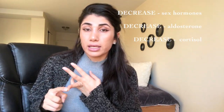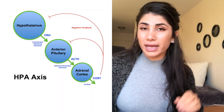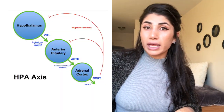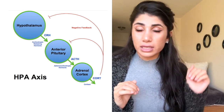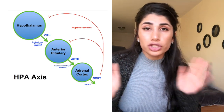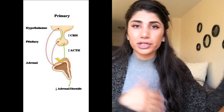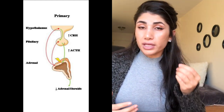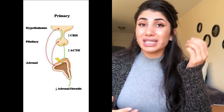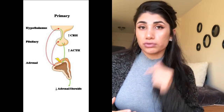If the adrenal gland is not producing those three hormones, you'll have decreased cortisol, decreased aldosterone, and decreased sex hormones. Because of negative feedback, the low cortisol isn't going back to tell the hypothalamus and pituitary to stop producing ACTH. So nobody's telling them to stop, and you end up with high levels of ACTH in primary adrenal insufficiency.